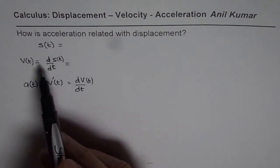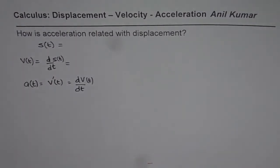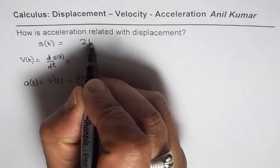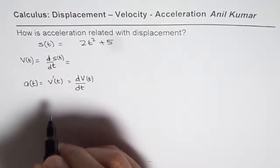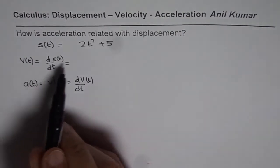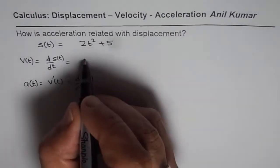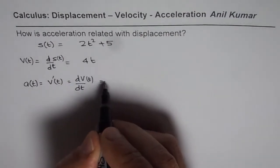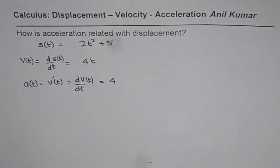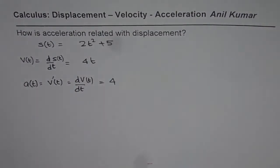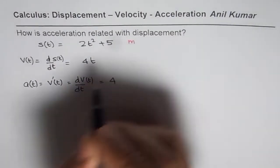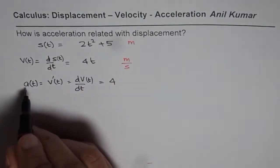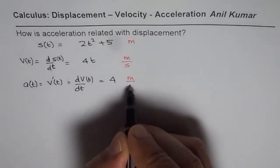That is how displacement, velocity and acceleration are related. So if I have some simple equation, let us say s = 2t² + 5, then velocity is going to be the derivative of this function, which is 4t. And acceleration will be the derivative of that, which is 4. So we get all three. If the units of displacement are in meters, then units of velocity will be meters per second, and units of acceleration will be meters per second squared.